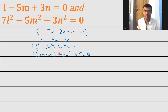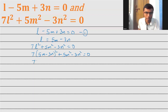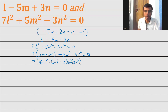Now the simplification will begin, so stay alert. This will be nothing but 7 into — this is a minus b whole square — so that would be a squared, (5m) whole squared, plus b squared, minus 2ab: 2 into 5m into 3n, plus 5m squared minus 3n squared is equal to 0.